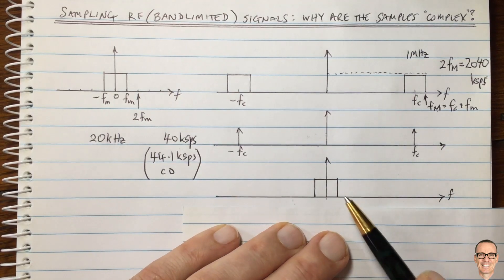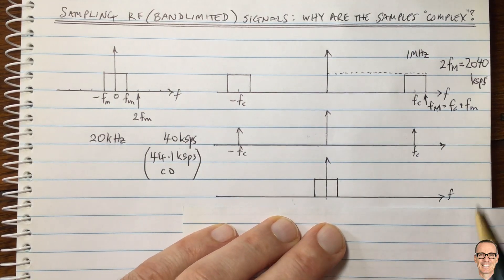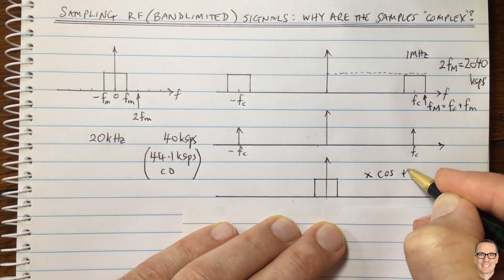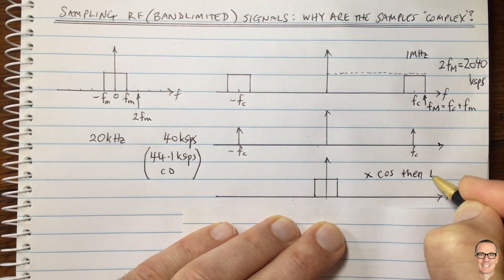Of course, there will also be ones at higher frequencies, but then we low-pass filter. So this is from multiplying by a cos and then low-pass filtering.